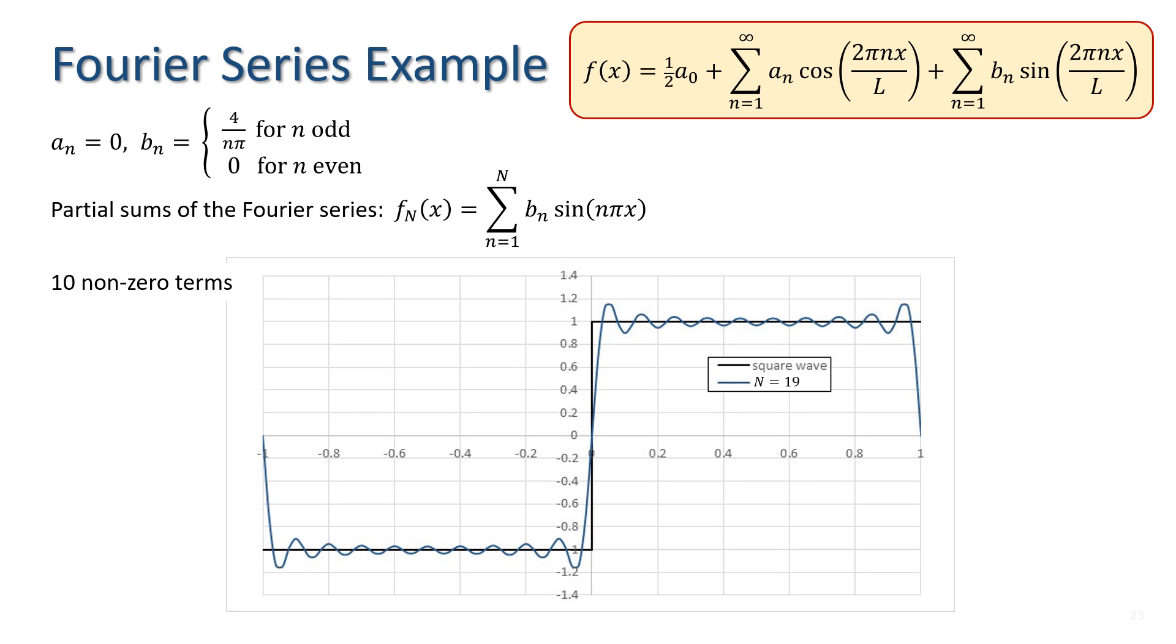However, we can also see that the partial sum exhibits oscillatory behaviour, and that these oscillations have a greater amplitude near the discontinuities at minus 1, 0, and 1. This is known as Gibbs phenomenon and is a typical feature of functions with discontinuities.